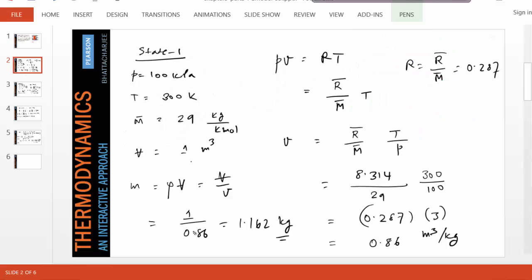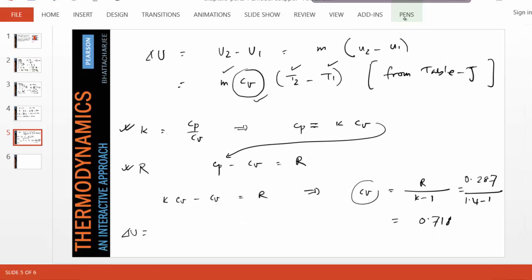Mass was found to be 1.162 kg. 1.162 and Cv we just found 0.718. And temperature difference is 754 minus 300. If we substitute these values, if you do the calculation, you get 379 kilojoules.